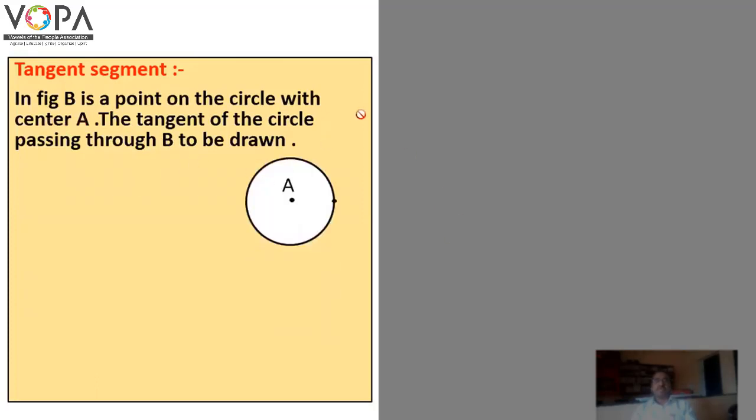In the figure, point B is a point on the circle with center A. The tangent of the circle passing through B is to be drawn.